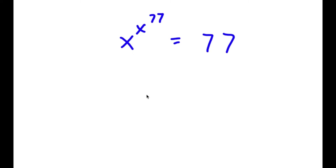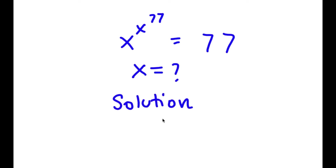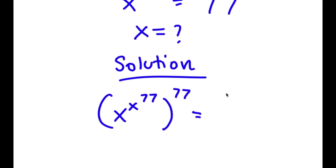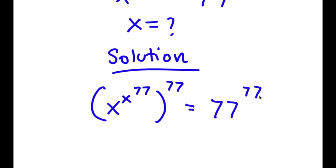In this problem, I have x to the power of x to the power of 77 is equal to 77. I want to find the value of x, so I'm going to start by taking the power of 77 on both sides. Now I have x to the power of x to the power of 77 to the power of 77 is equal to 77 to the power of 77.